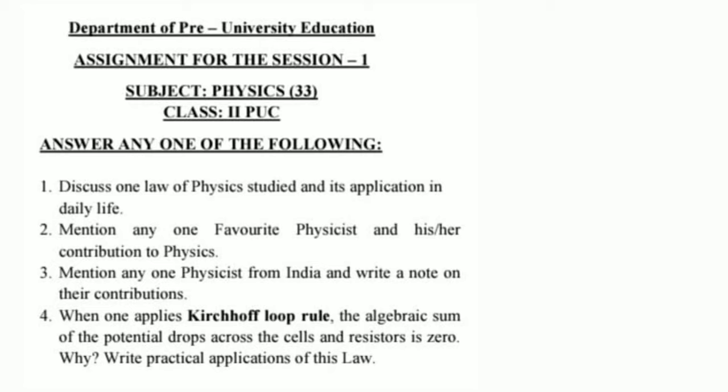Let us come to the first question: discuss one law of physics studied and its application in daily life. Many laws we have studied — any law you can consider. For example, the velocity of a freely falling body: v² = 2gh, which we have learned in projectile motion and in gravitation. So you can write v = √(2gh), meaning the more the height, the more the velocity.